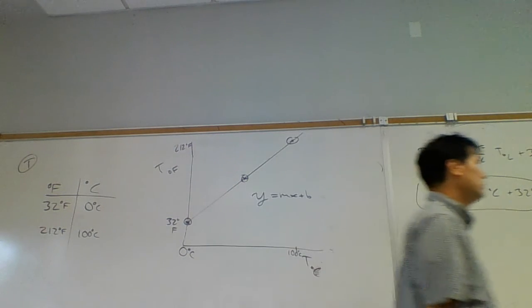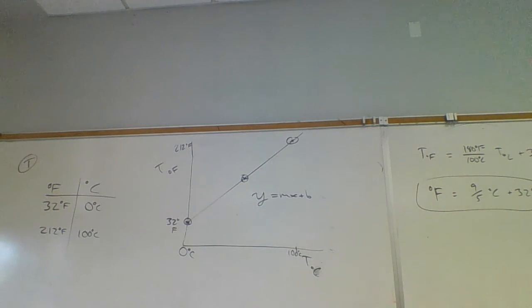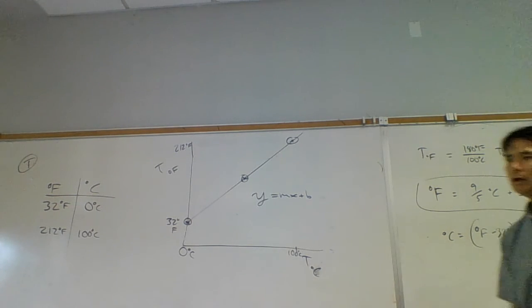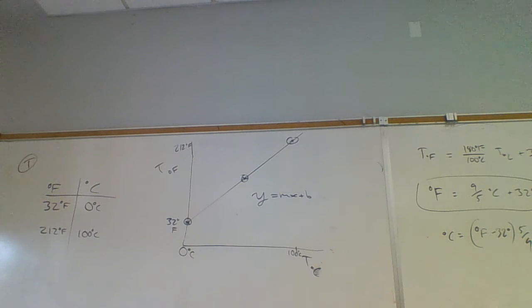This is just rearranged, solving for degrees Celsius. In other words, degrees Celsius is equal to degrees Fahrenheit minus 32 degrees times 5 ninths. That would be the other equation there. 9 fifths is 1.8, or 180 over 100.